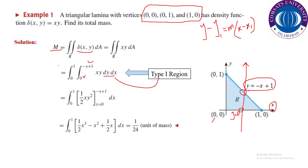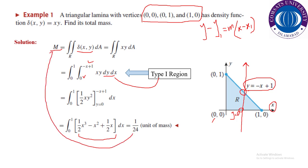Once the integral is set up, we solve it. First integrate with respect to y: the result is y²/2, with x remaining constant. Apply upper limit minus lower limit. Then integrate with respect to x: this yields x⁴/4, x³/3, and x²/2 terms. Apply the upper limit minus the lower limit across the whole function. This gives the final answer, which is the mass of the lamina.